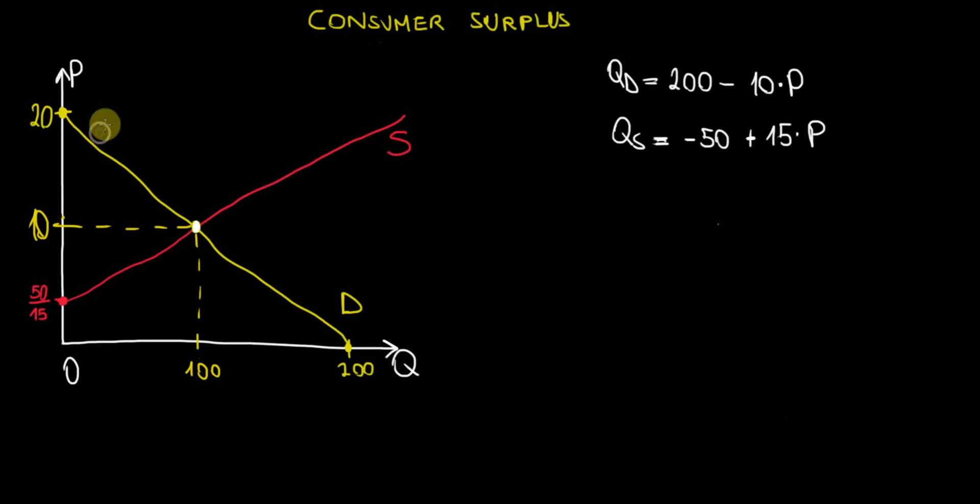I'm gonna write it as WTP, willingness to pay of customers. That means that at this given level of quantity, let's suppose that at this given level of 10 units of quantity customers are willing to pay for instance $18 per unit. At least graphically it looks to be quite accurate. Suppose that this is the case.